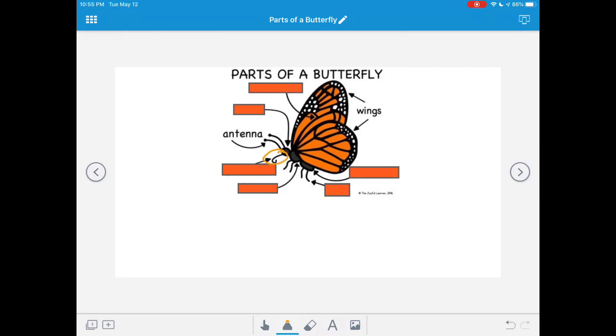How about the straw-like feature that helps the butterfly eat its food from the flowers? What is that called? That's a new word. That's the proboscis. Can you say proboscis?